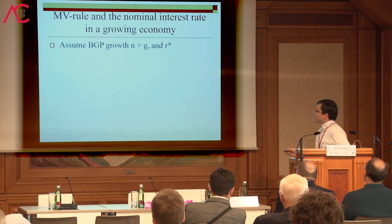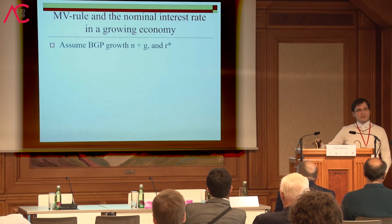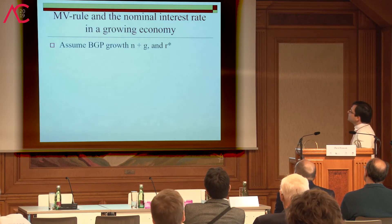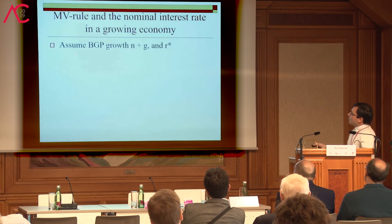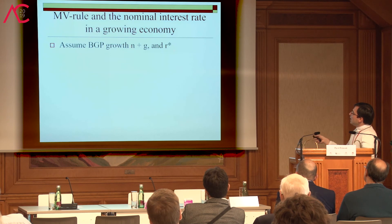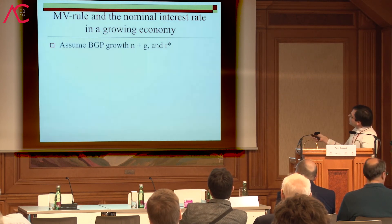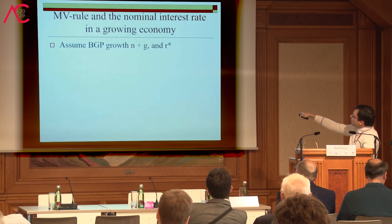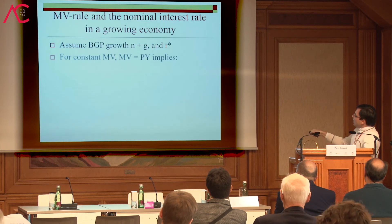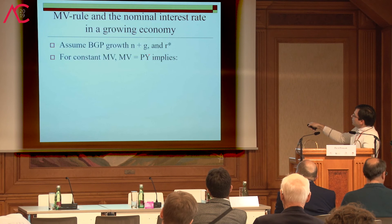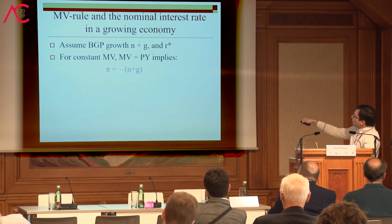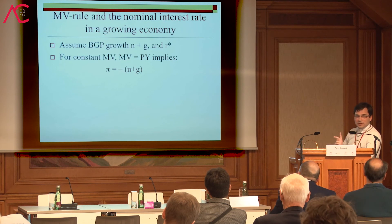The MV rule is actually a deflationary monetary rule when the economy is growing. Consider the impact on the nominal interest rate in the long run. Suppose the economy is on the balanced growth path from the standard growth model: real GDP is growing at the rate of technological progress g plus population growth n, and there is a constant real interest rate — the natural interest rate. Hayek wanted MV to be stabilized, but output is growing at rate n plus g, so this requires a falling price level at the same rate — inflation equals minus (n+g), the opposite of the economy's growth rate.